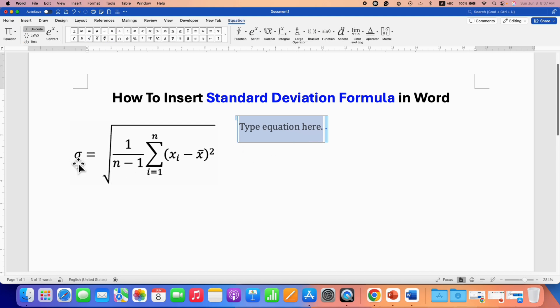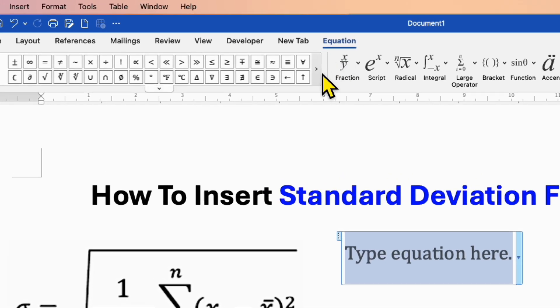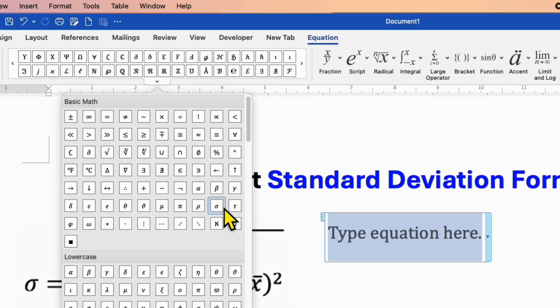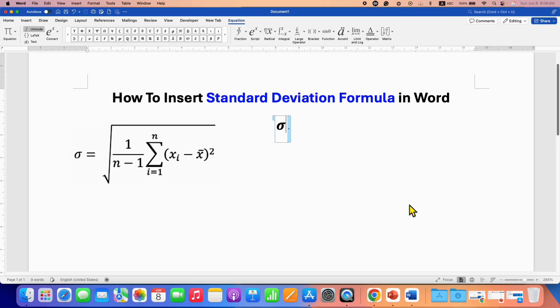Now first we need to type the sigma symbol. To type the sigma symbol, under the Equation tab you will see symbols. Just locate the sigma symbol. For example, in my case it's here. If you cannot find the sigma symbol, just type backspace and sigma and press spacebar on your keyboard to get the sigma symbol, and then type equal to.